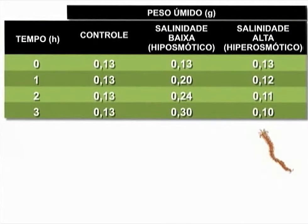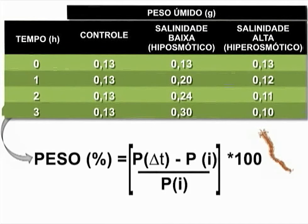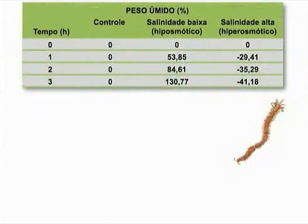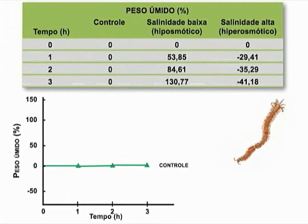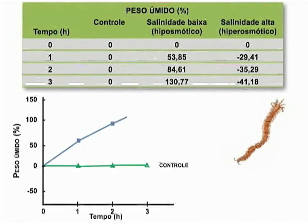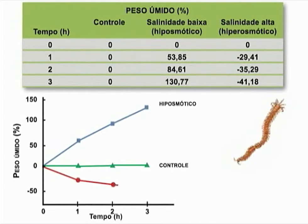Agora, vamos analisar os dados dos poliquetas. Depois de obtermos os pesos dos animais nas diferentes salinidades e diferentes tempos, aplicamos novamente a fórmula para a transformação dos dados. Note que houve maior variação de peso para o animal exposto à salinidade baixa do que para o animal exposto à salinidade alta, quando comparados com o controle. Estes dados estão plotados no gráfico, onde podemos ver de forma clara a variação temporal do peso dos poliquetas. No choque hiposmótico, a variação de peso se mostrou mais pronunciada, refletindo um ganho de água corporal. Já no choque hiperosmótico, houve uma perda de água para o ambiente e o animal teve seu peso reduzido. Parece que o poliqueta é mais sensível ao estresse salino hiposmótico do que ao estresse hiperosmótico.